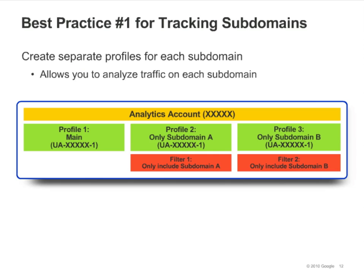There are a few best practices for setting up your Analytics account to track across multiple subdomains. First, create separate profiles for each subdomain so you'll be able to see reports for each one. Set up duplicate profiles: one master profile plus one profile for each subdomain. In this example with two subdomains, your master profile has no filters, and each of the other two has an include filter. Profile 1 includes all traffic to both subdomains. Profile 2 includes only traffic to subdomain A. Profile 3 includes only traffic to subdomain B.